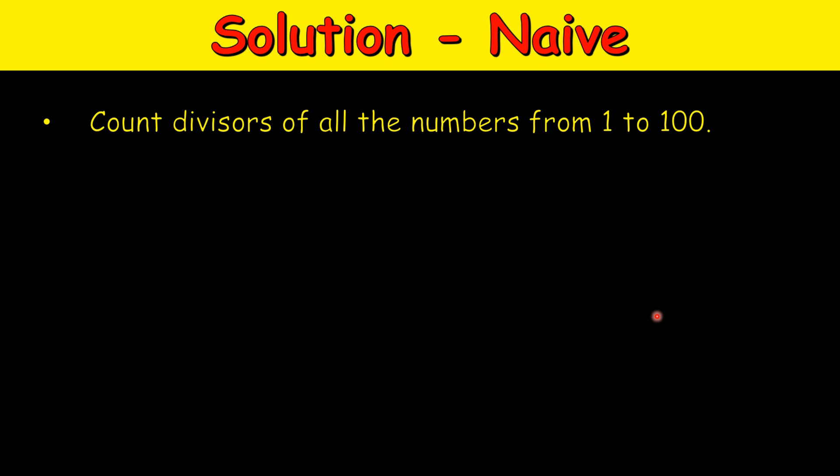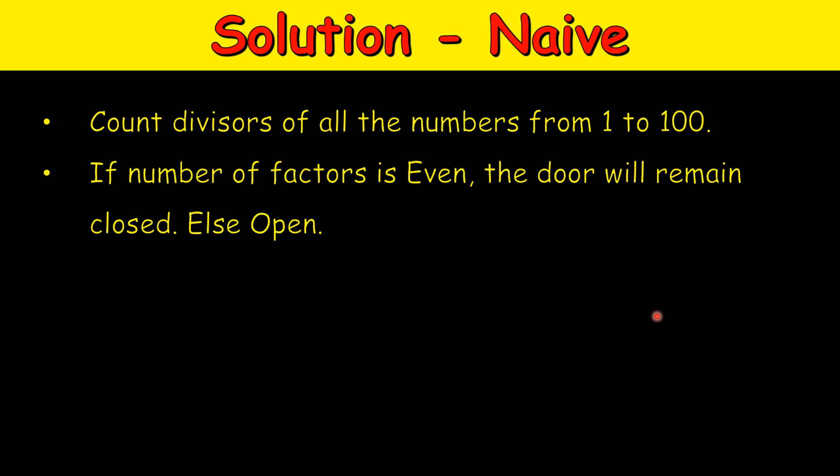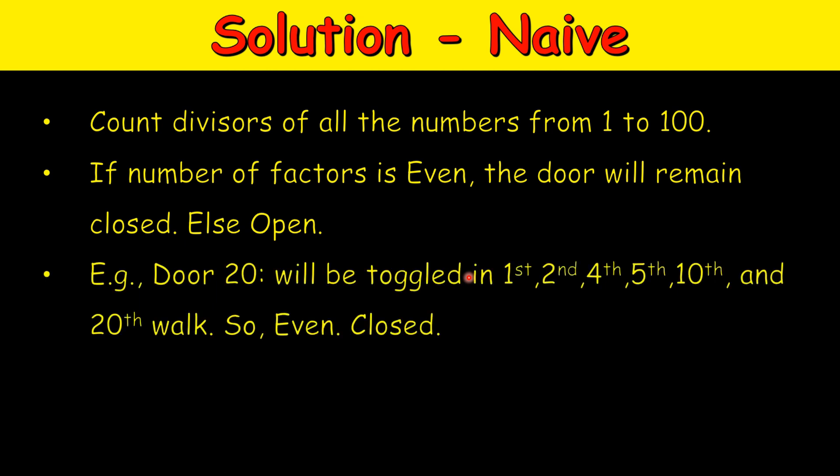For example, 10 has divisors 1, 2, 5, and 10. So we need to count the divisors of all numbers from 1 to 100. If the number of factors is even, the door will be toggled an even number of times and remain closed. If the number of factors is odd, the door will remain open. However, this is an exhaustive process and won't scale — for a thousand or ten thousand doors, listing all factors is not recommended.